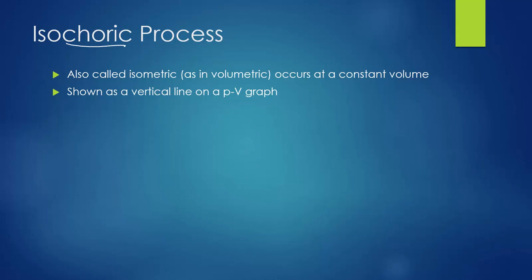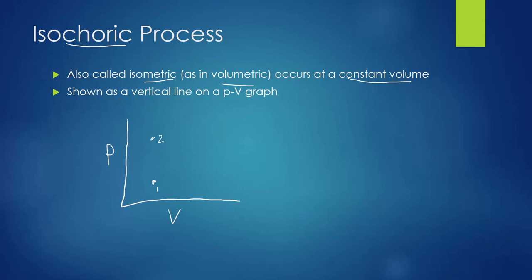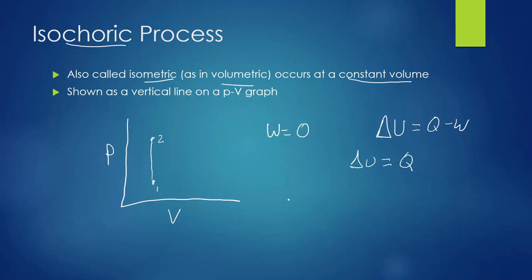The next process is called isochoric — also called isometric — meaning constant volume. On a PV graph this appears as a vertical line from state 1 to state 2. Since there is no area under a vertical line, no work is done: W = 0. Therefore the first law reduces to ΔU = Q. All energy added to the system goes into increasing the internal energy of the gas particles, meaning they move faster and pressure increases.